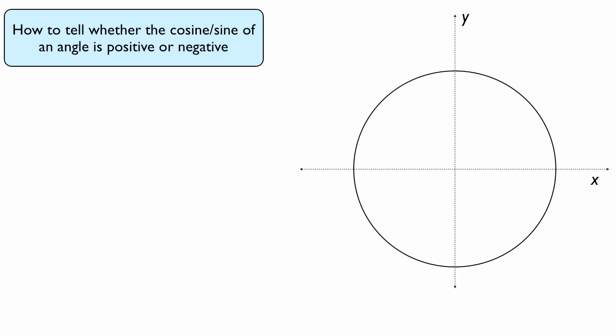How can we tell whether the cosine or sine of an angle is positive or negative? Well, the most important thing first is to draw the unit circle, because that's how we define the cosine of every angle.